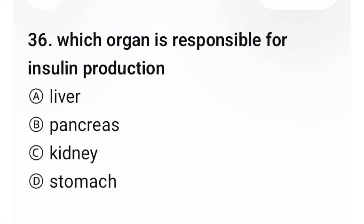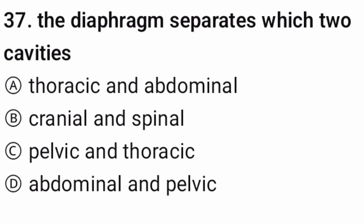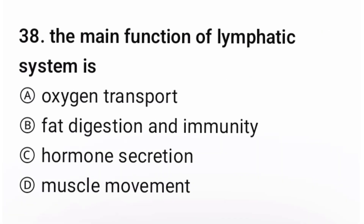Question 36: Which organ is responsible for insulin production? The correct option is B, pancreas. Question 37: The diaphragm separates which two cavities? The correct option is A. Question 38: The main function of the lymphatic system is — the correct option is B.